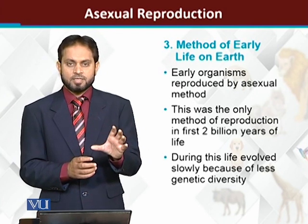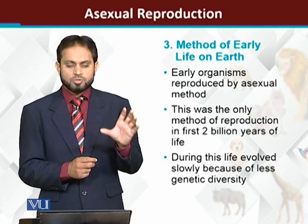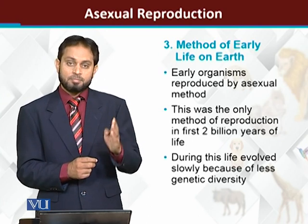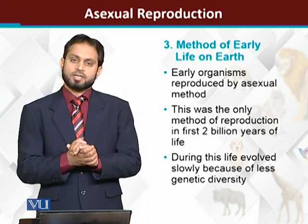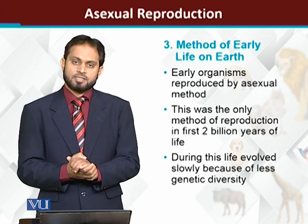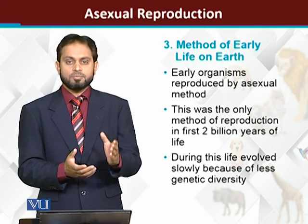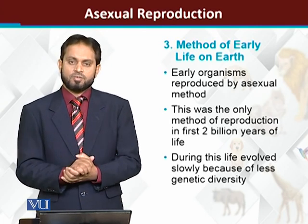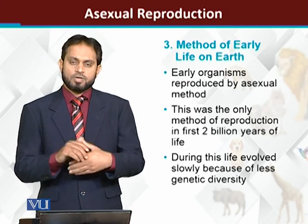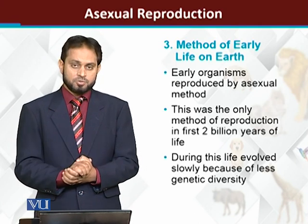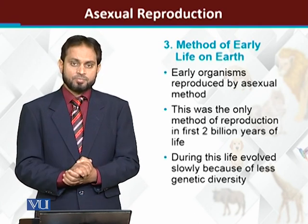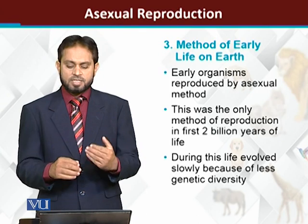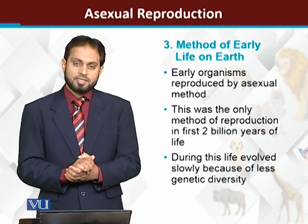This continued up to approximately two billion years ago — meaning for the first two billion years of life, organisms reproduced only asexually. After two billion years, the method of sexual reproduction evolved and animals began to reproduce sexually.